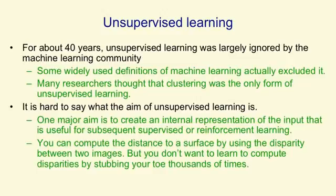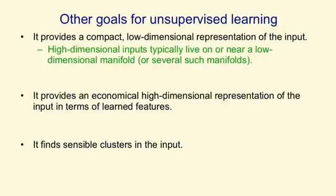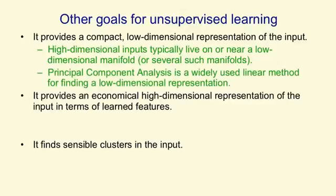Other goals for unsupervised learning are to provide compact, low-dimensional representations of the input. High-dimensional inputs like images typically live on or near a low-dimensional manifold, or several such manifolds in the case of handwritten digits. What that means is that even if you have a million pixels, there aren't really a million degrees of freedom — there may only be a few hundred. So we want to move from a million pixels to a representation of those few hundred degrees of freedom, equivalent to saying where we are on a manifold, and also which manifold we're on. A very limited form of this is principal components analysis, which is linear — it assumes one manifold that is a plane in the high-dimensional space.